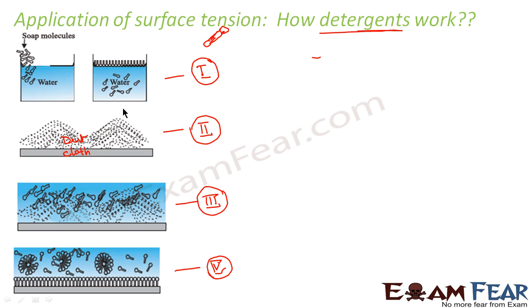Surface tension played an important role here. Quick review: when we add detergent molecules which are hairpin shaped, on one end they attract water and on the other end they attract the greasy or oily particles. As a result, the oily particles get attracted towards the detergent molecule, are suspended in water, therefore leave the clothes, and the clothes become dirt free.